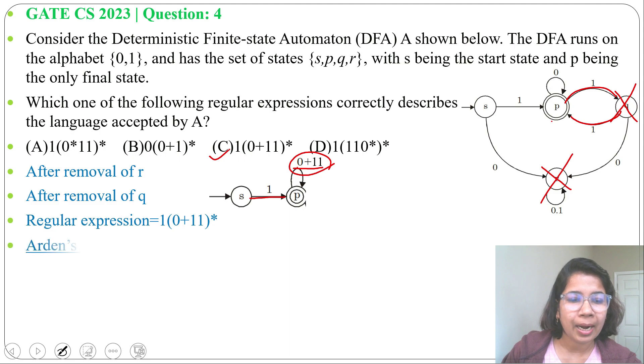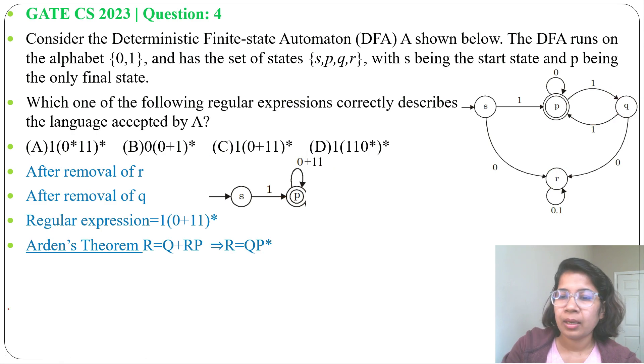Another way is by Arden's theorem. If R equals Q + RP, then R equals QP Kleene closure. Now for S, no input, so S will be epsilon. Then for Q, from P by 1 we are reaching to Q. So Q equals P1.